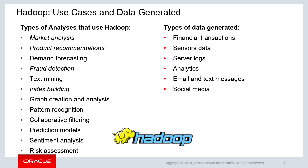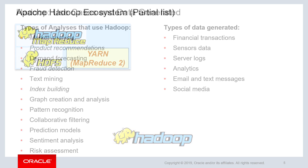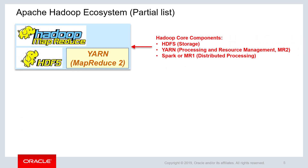Types of data generated in Hadoop include financial transactions, sensor data, server logs, analytics, social media, and much more. Apache Hadoop is a framework that enables distributed storage and processing of huge amounts of data in a cost-effective way.